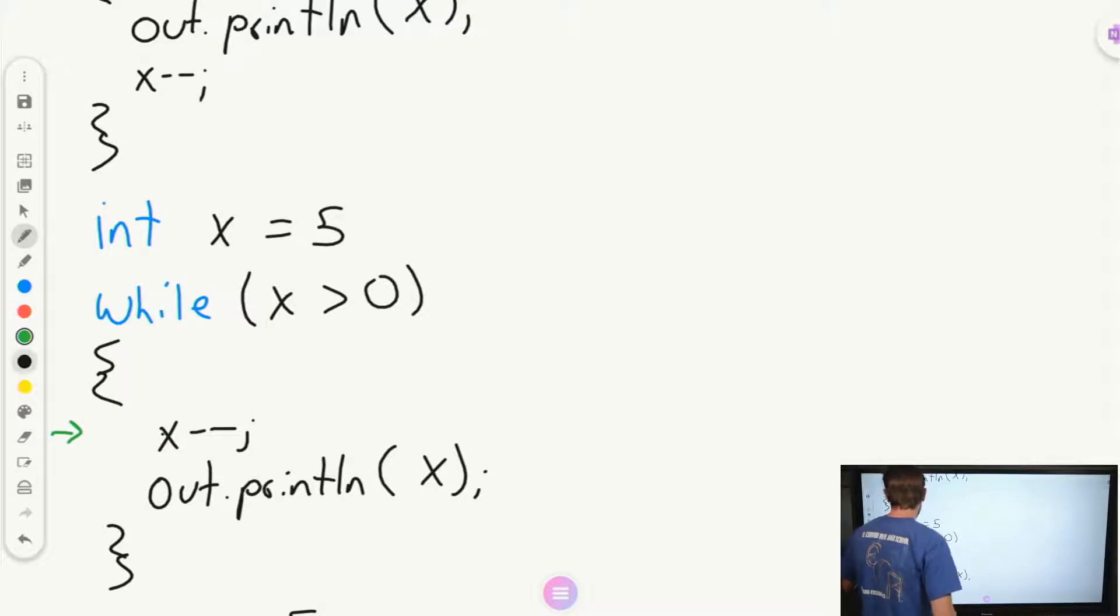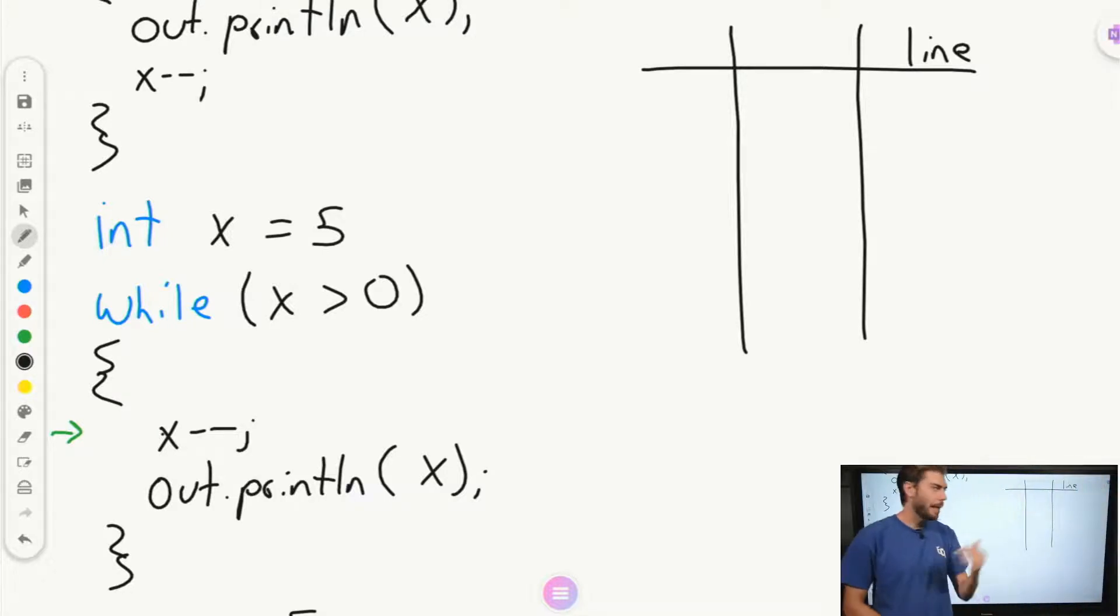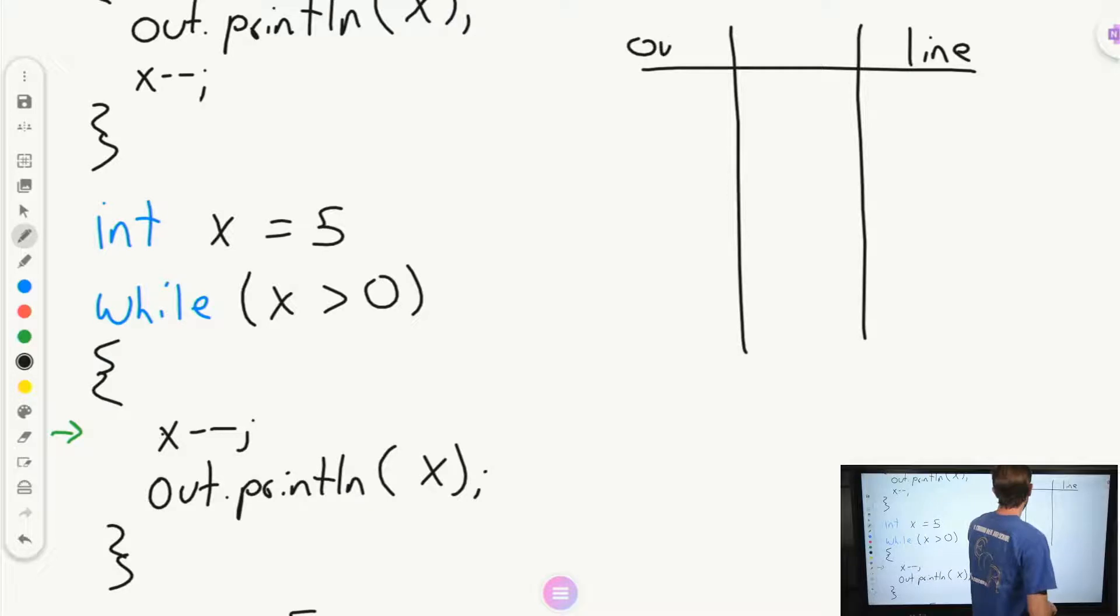Okay, let's try and set up our trace here. So again, if you need the line numbers, you can go ahead and put them there. But for time's sake, I'm going to avoid the line for the moment. Out. And I'm going to put the x. Okay, so value of x starts at 5.